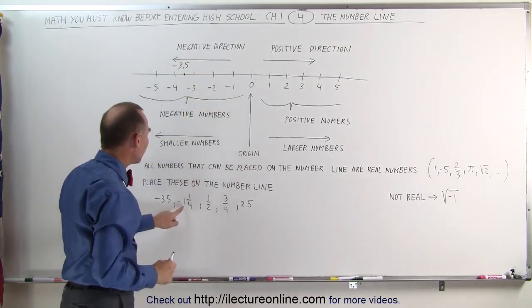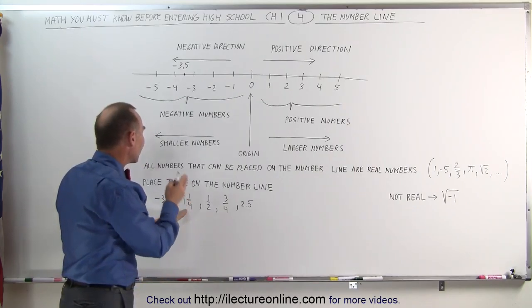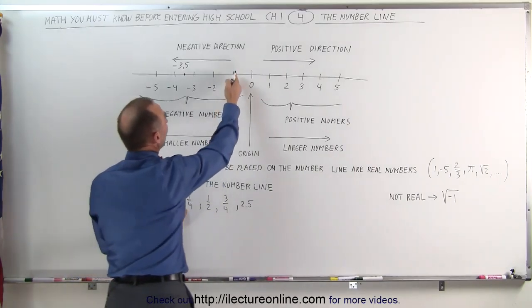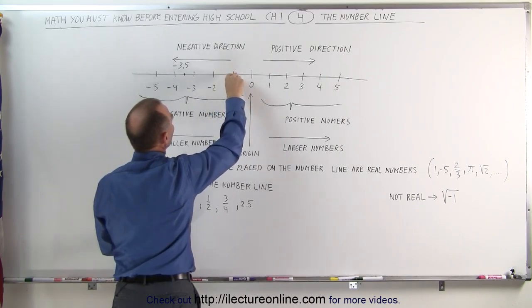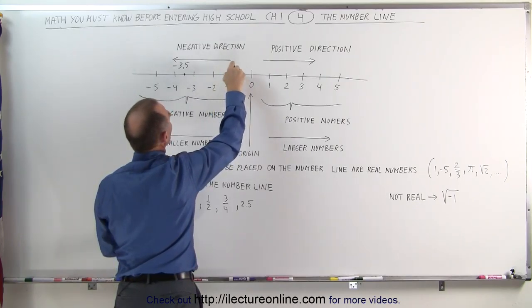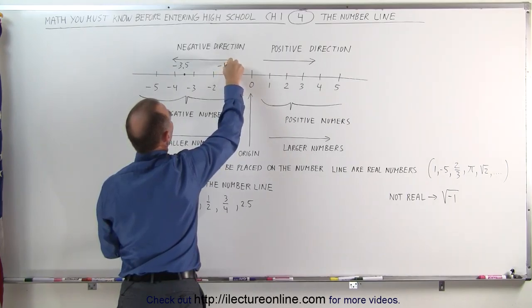The number negative 1 and a quarter, that is 1 and a quarter to the left of 1. If this is 1, this is one quarter the distance from negative 1 to negative 2, that places it right about there. This is the number minus 1 and a quarter.